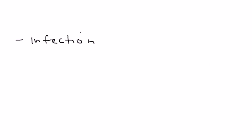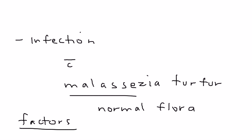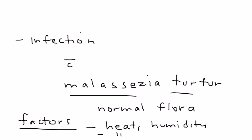Tinea versicolor is an infection caused by a fungus known as Malassezia furfur, which is part of our normal flora. Now, if it's part of our normal flora, why does it cause a rash? There are certain factors that can contribute to this fungus developing into a rash — notably it is asymptomatic — and those factors are heat, humidity, and any form of immunosuppression.